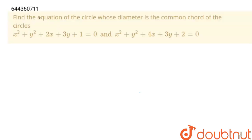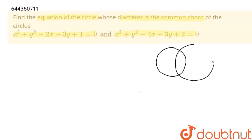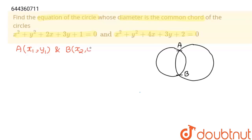Hello students. The question is: find the equation of the circle whose diameter is the common chord of circle C1 and circle C2. Suppose both circles intersect at point A and at point B, where coordinates of A are (x1, y1) and coordinates of B are (x2, y2).